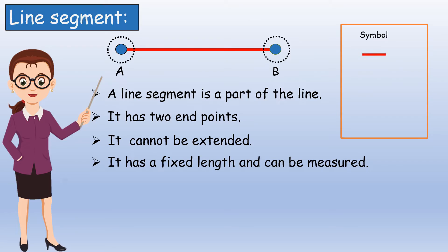The symbol for a line segment is written as Line segment AB or Line segment BA.